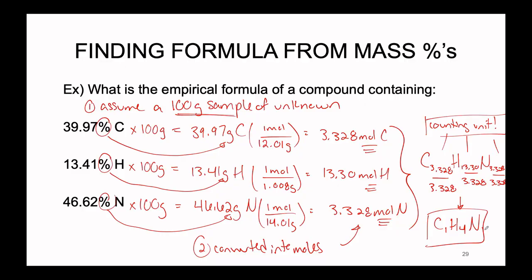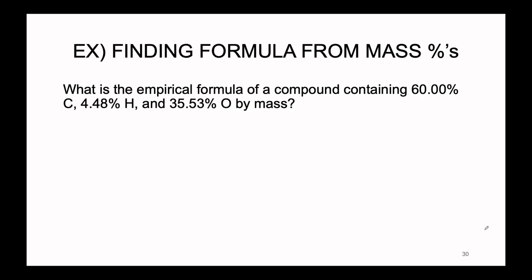All right, so now that we've worked through an example together, I would like you guys to pause the video and try an example by yourself. So what is the empirical formula of a compound that contains 60% carbon, 4.48% hydrogen, and 35.53% oxygen by mass.